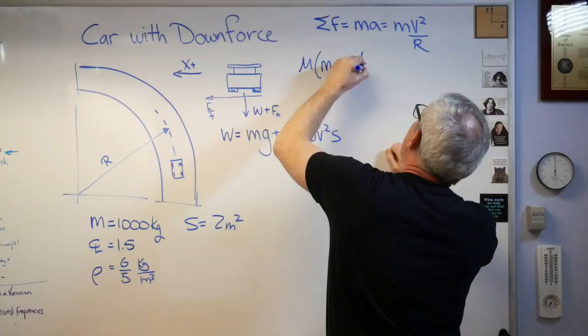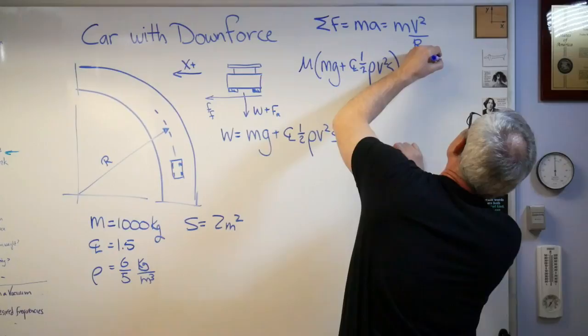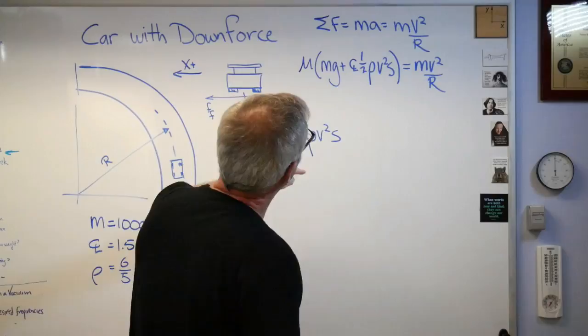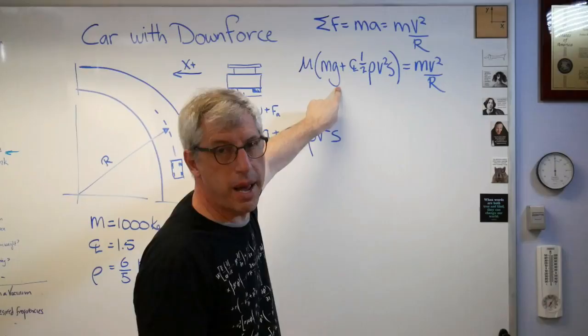We only have one force. It's mu times N, where that's N. So mu times MG plus CL one-half rho V squared S equals MV squared over R. When you don't have aerodynamic force, the mass cancels out. Mass doesn't appear in every term here, so mass does not cancel out.